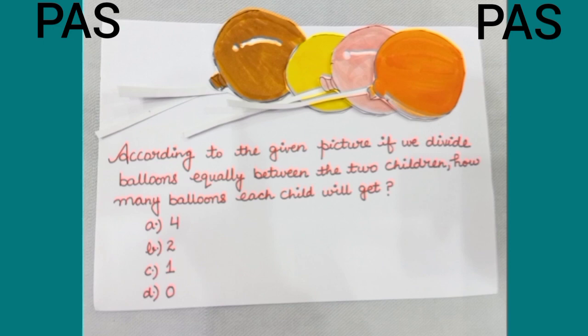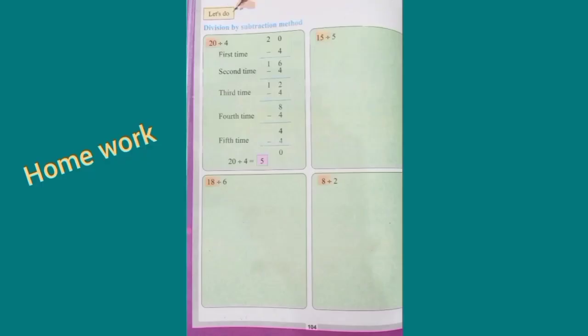So let us see the options. Option A is 4 — that is not correct. Option B is 2 — that is correct. Option C is 1 — that is not correct. And option D is 0 — that is not correct. So the right answer for our question is Option B, that is 2. In the homework, dear students, solve the sums given at page number 104 of your maths book. Thank you.